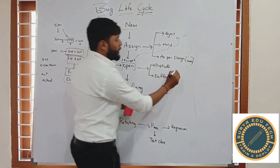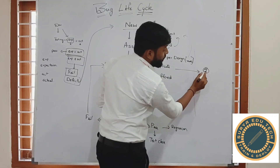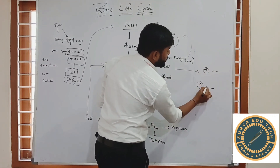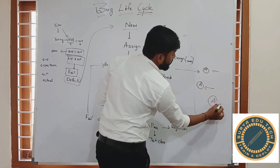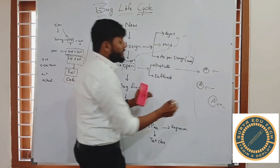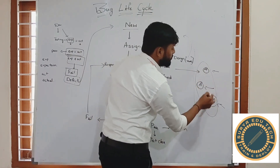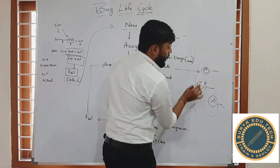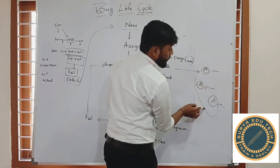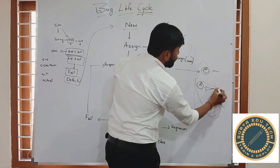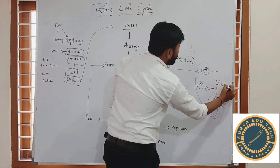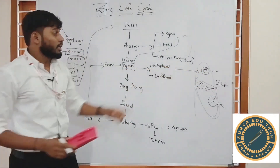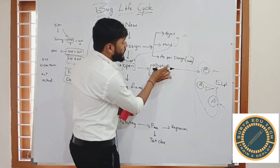What is a duplicate defect? If one tester finds defect A and another tester also finds the same defect A, both are the same scenario and the same defect. From the developer's perspective, he cannot open these two separately — he names them as 'Duplicate'. Duplicate means two defects are similar to each other.